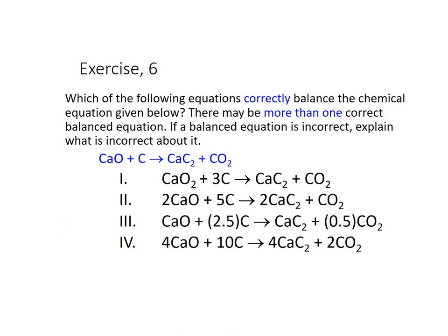Weird question. Which of the following equations correctly balances the equation given below? There may be more than one correct balanced equation. If a balanced equation is incorrect, explain what is incorrect. All right, I got CaO plus C producing CaC2 plus CO2. Okay, well, the first thing I'm noticing about number one is it might balance, but look at what happened. They added a subscript. You cannot do that. You can't change the formula. All right, so now let's add these. Two calcium, two calcium. Two oxygen, two oxygen. Five carbon. Four here plus one is five. That one balances.